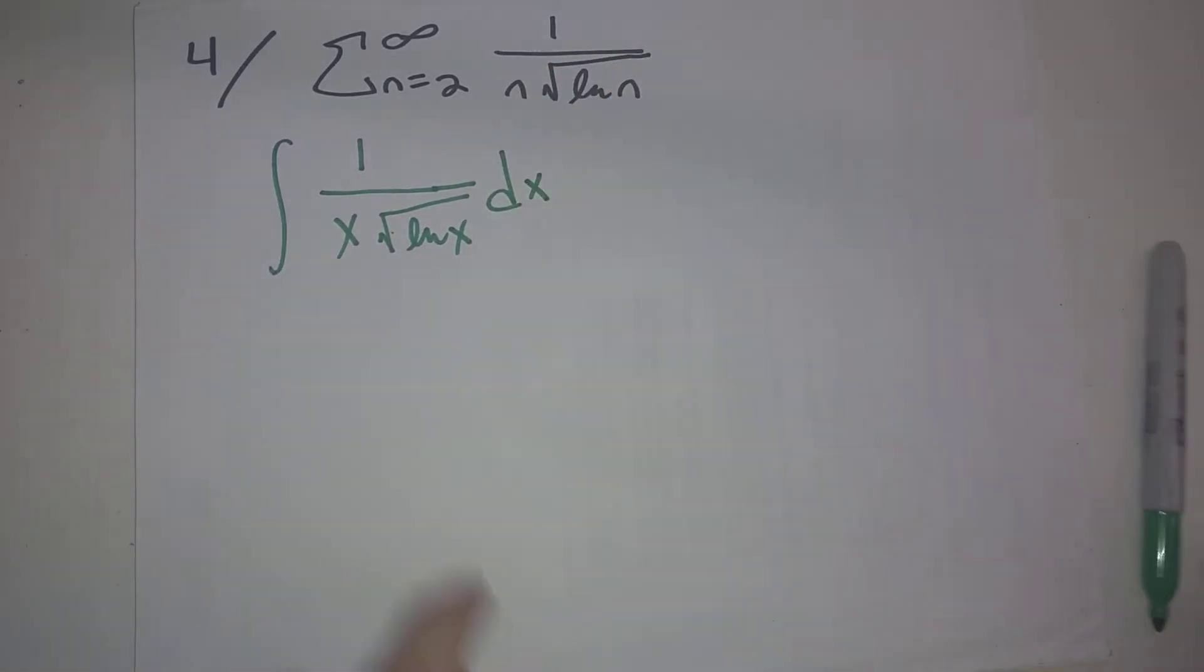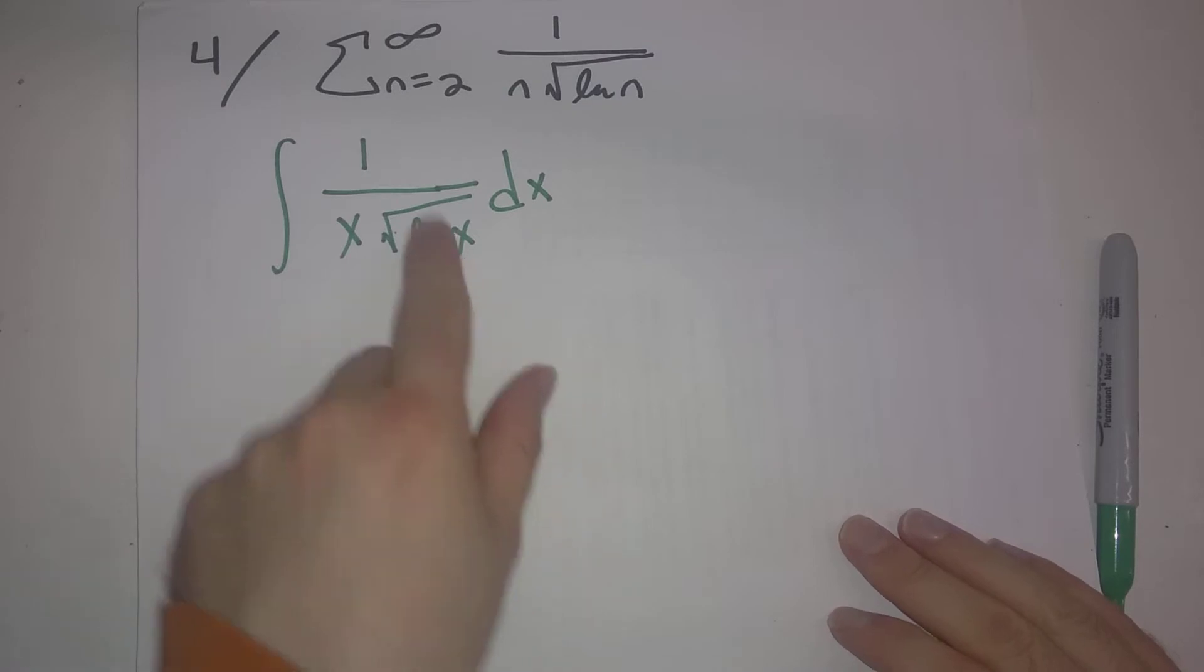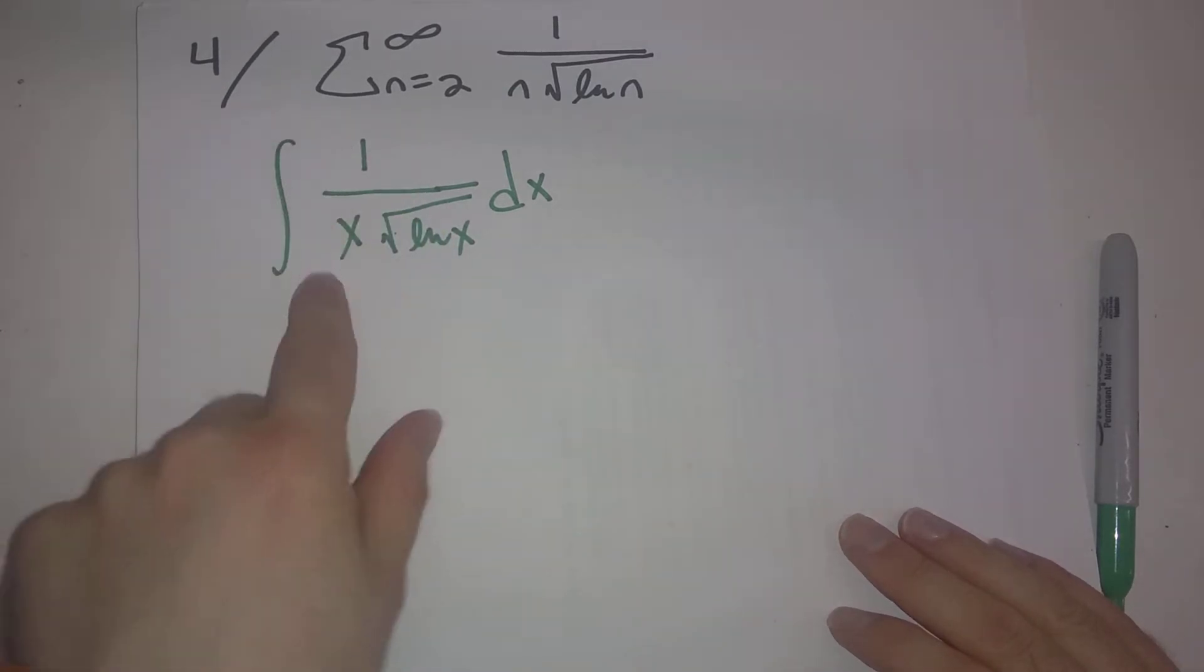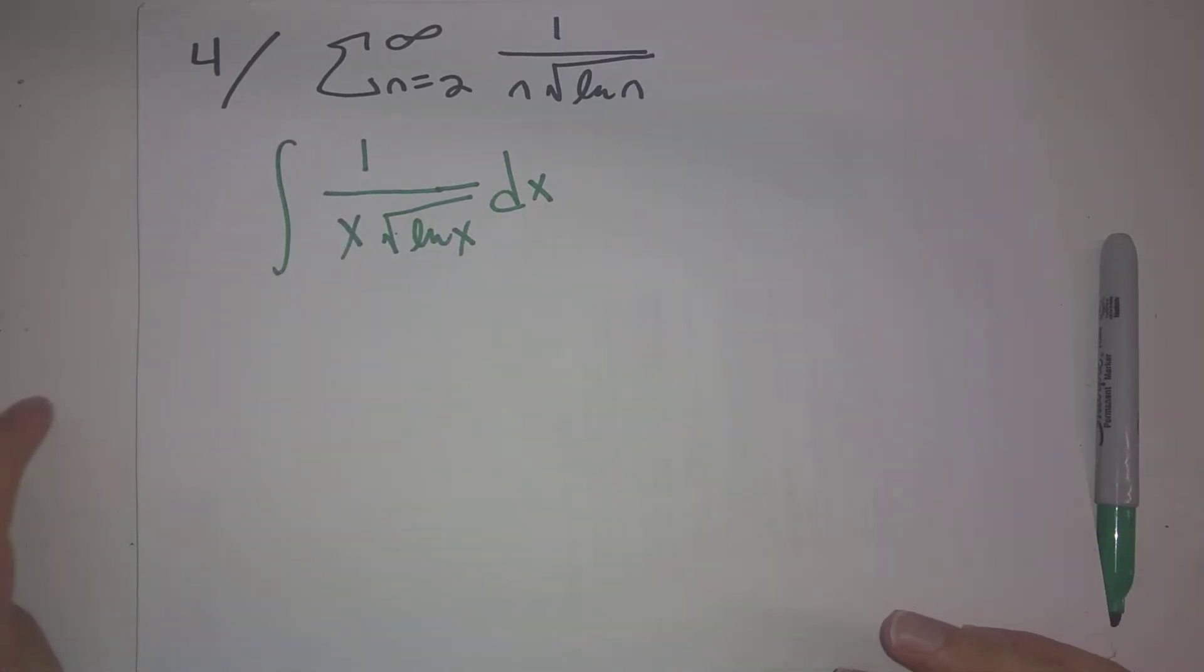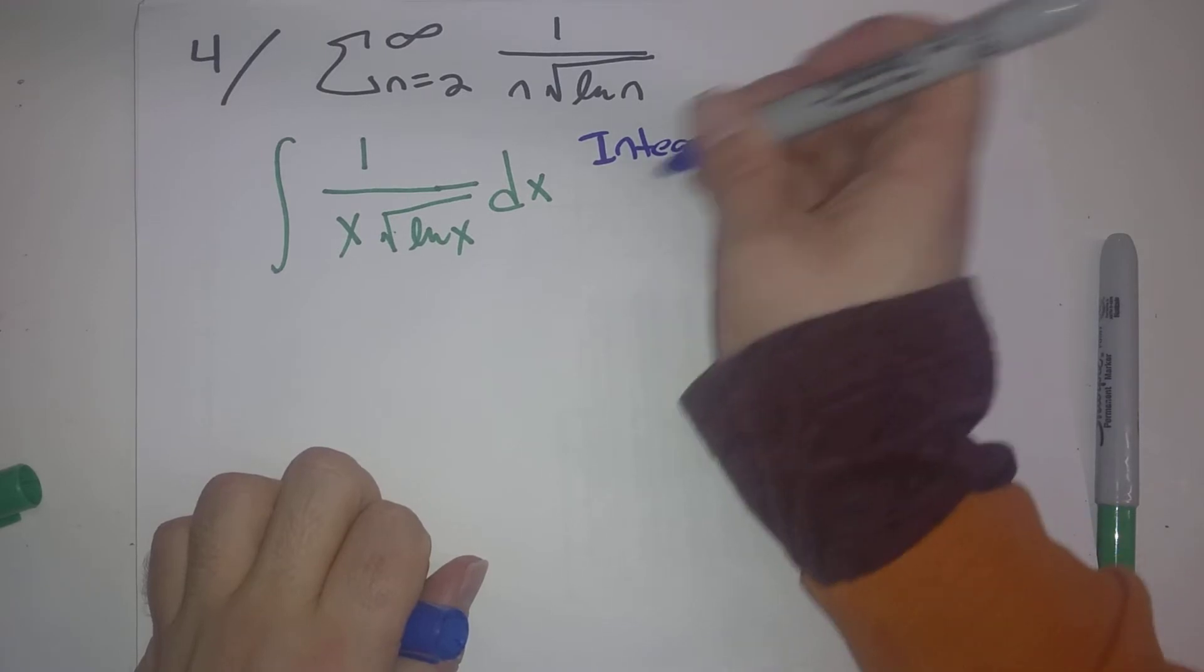As it turns out, if we do a substitution where u equals natural log of x, then du would be 1 over x dx, that's going to all check out. And so integral test is probably the test that we want to use.